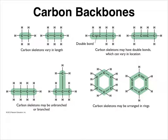Carbon backbones can be linear and of different lengths. A two-carbon backbone is called ethane; a three-carbon backbone is propane. In naming, 'meth' means one carbon, 'eth' means two carbons, 'prop' is three carbons, 'but' is four carbons, 'pent' is five, 'hex' is six, and up from there.